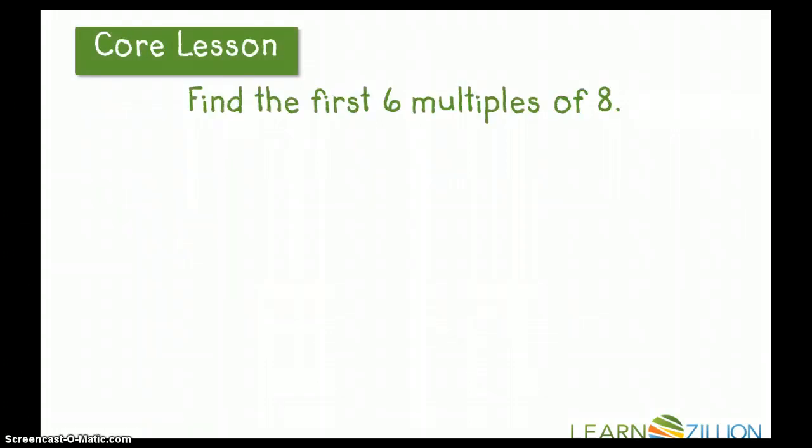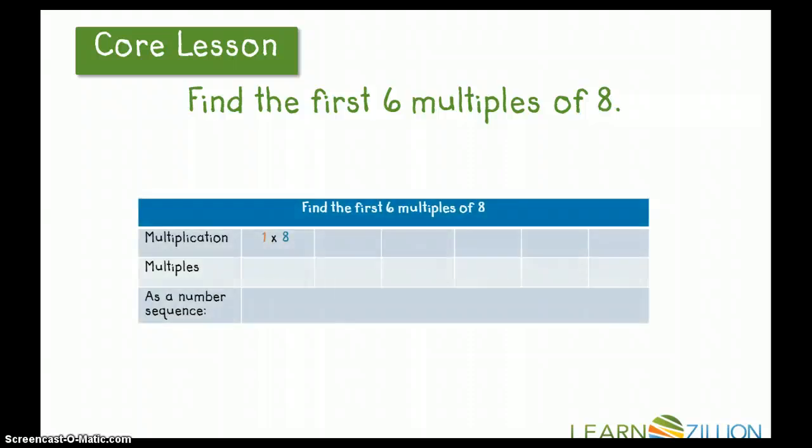Let's take a look at another example. Find the first six multiples of eight. There's my table again, and of course, I'm starting with one times eight, and that will give me the multiple, or product, of eight. Then I go to two times eight and I get sixteen. And I continue this pattern until I get my first six multiples of eight. One times eight is eight, two times eight is sixteen, three times eight is twenty-four, four times eight is thirty-two, five times eight is forty, and six times eight is forty-eight.